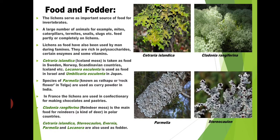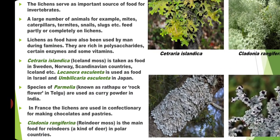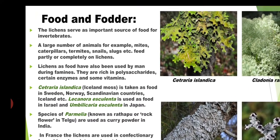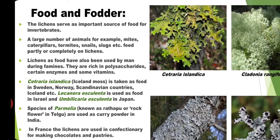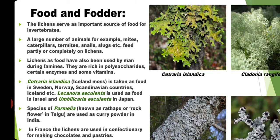Lichens are also used as food and fodder. They serve as an important source of food for invertebrates — a large number of animals such as mites, caterpillars, termites, snails, and slugs feed on lichens. Lichens as food have also been used by humans during famines. They are rich in polysaccharides, certain enzymes, and some vitamins.